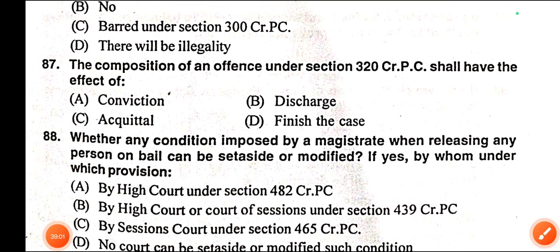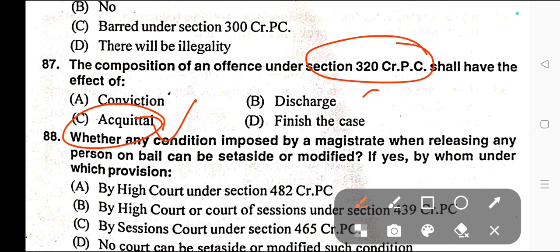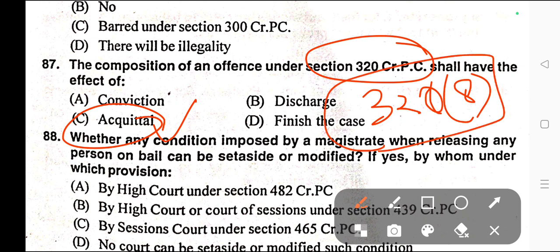Question number eighty-seven: The composition of an offence under Section 320 of CrPC shall have the effect of — A) Conviction, B) Discharge, C) Acquittal, D) Finish the case. Correct answer is option C — acquittal. Section 320 Clause 8 of CrPC provides that the composition of an offence under this section shall have the effect of an acquittal of the accused with whom the offence has been compounded.